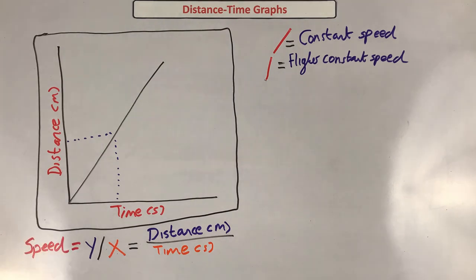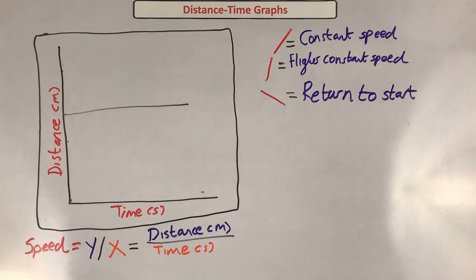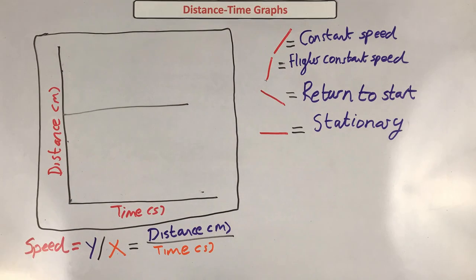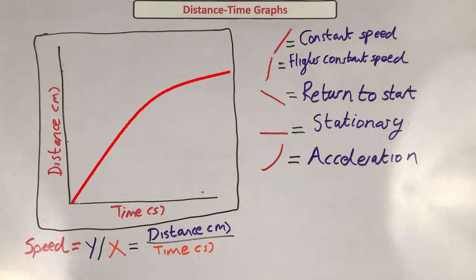If the line is moving down in a straight line, the object is returning back to its start position. If the line is horizontal, the object is stationary and not moving. If the line curves towards the y-axis, the object is accelerating, and if it's curving away from the y-axis, the object is decelerating.